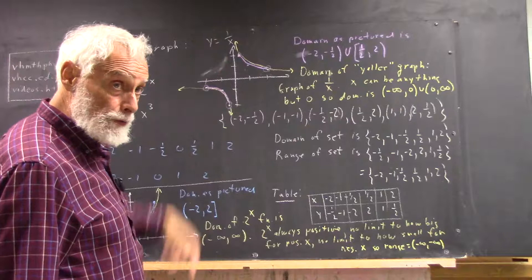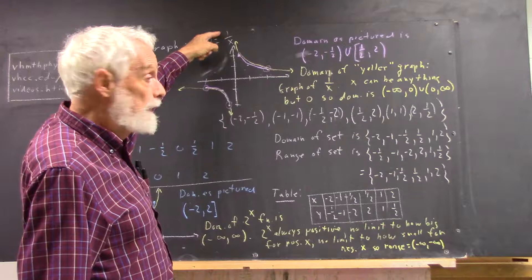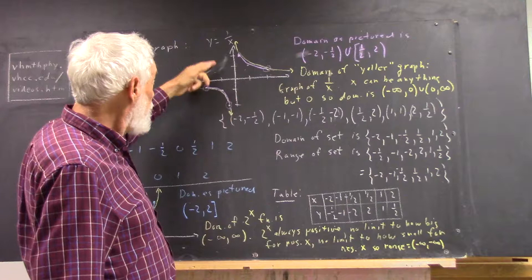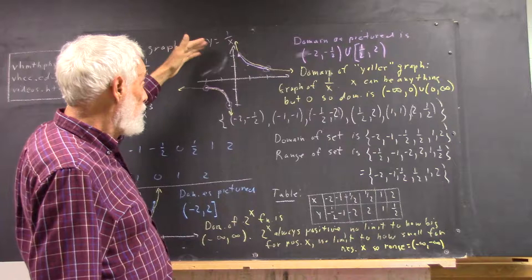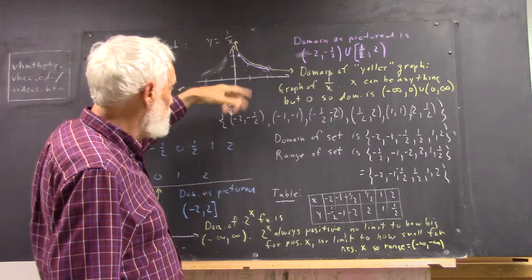We didn't talk about the range of the 1 over x function, but it doesn't include 0 because there's no number you can divide into 1 to give you 0. So the range doesn't include 0, but for any other possible value of y, you can solve the equation y equals 1 over x for x and you can get that value of y. So the range will include all numbers, all real numbers except 0, and that corresponds to all the possible y values.